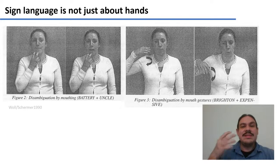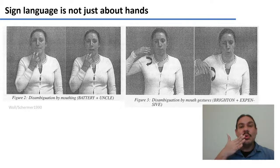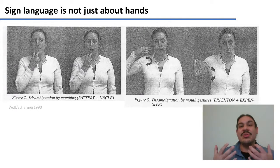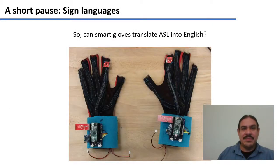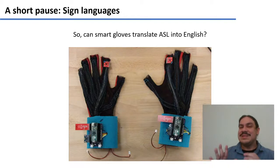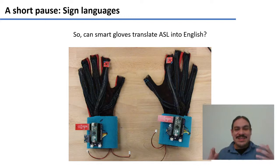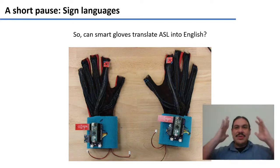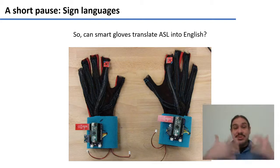So things like the position of your torso, your eyebrows, and your lips are also parts of words in sign languages — it's not just using your hands. Because of that, whenever someone tells you they developed gloves that can translate ASL into English, they're probably selling you snake oil. Sign languages are not just about your hands; they have to do with the torso, the face, and the interaction between all of these.